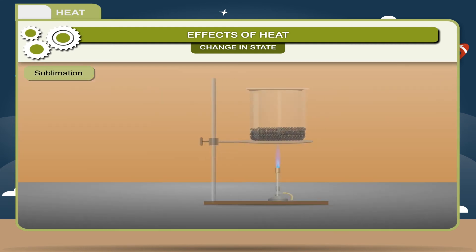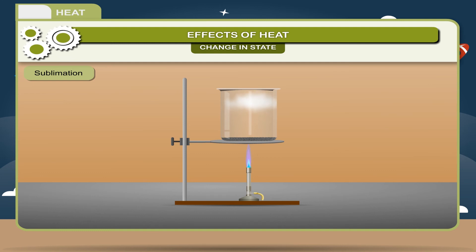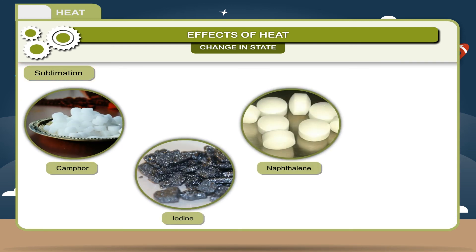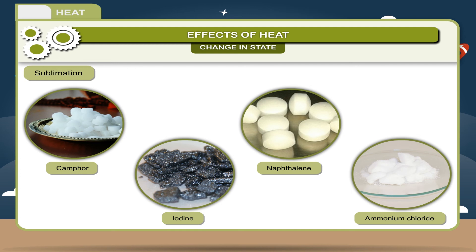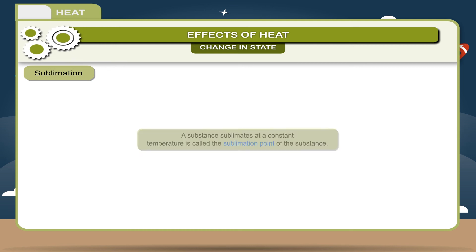Sublimation: In sublimation, a solid changes directly into gaseous state by absorbing heat without changing into liquid state. Such substances in their solid state are called sublimates and in their gaseous states are called sublimes. Some examples of sublimates are camphor, iodine, naphthalene, and ammonium chloride. A substance sublimates at a constant temperature called the sublimation point of the substance.